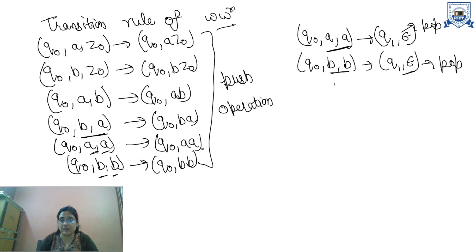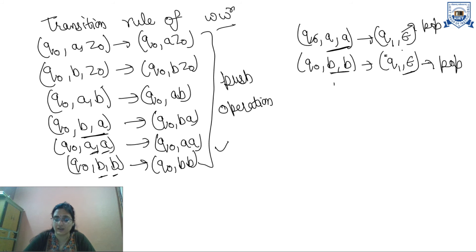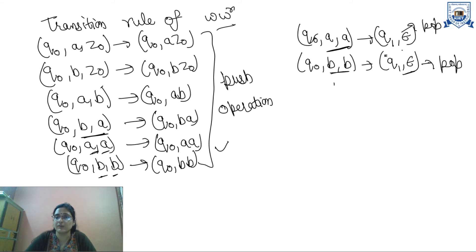Now you can understand that this is a non-deterministic pushdown automata, because for the same input symbols I am performing more than one operation — both push and pop — and moving to more than one state. In deterministic pushdown automata, from a current state you go to a maximum of one next state. Whereas in non-deterministic pushdown automata, we can move to more than one state and perform more than one operation on the same state.